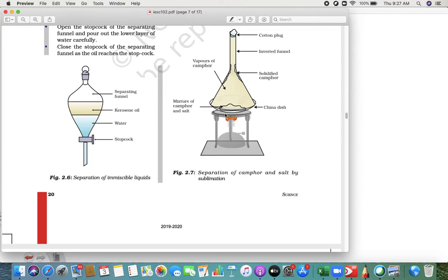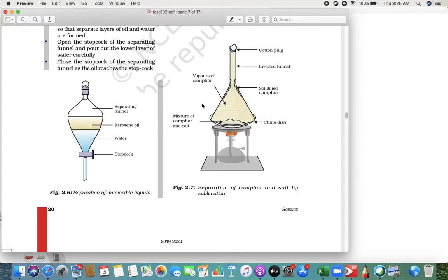Camphor gets directly converted into gas. When it goes into gas, it goes up. When it goes up, the gas converts directly again into solid which gets attached at the top.